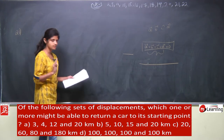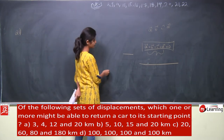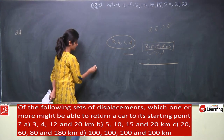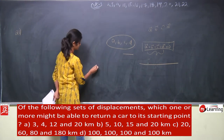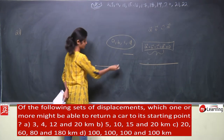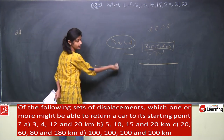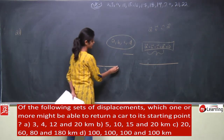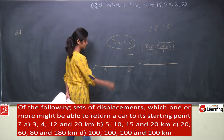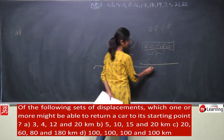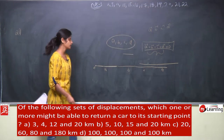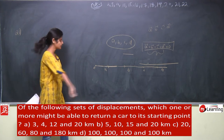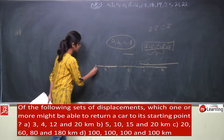If all four displacements are in the forward direction, the resultant is always positive, so the car can never return to the starting point. For the car to return, either A + B + C = D (three forward, one backward of equal magnitude), or A + B = C + D (two forward, two backward with equal sums).